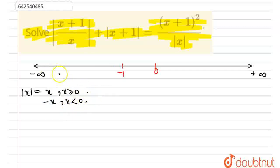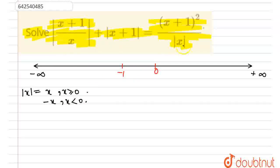Now, a number line has been constructed and the points minus 1 and 0 are plotted because they are critical points. x+1 = 0 gives x = -1, and for x = 0 the equation cannot be defined. So these are the critical points and they have been plotted. Now let's take a case-by-case analysis.